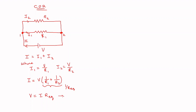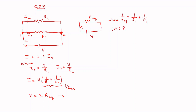Let me take 1 by R equivalent equal to 1/R1 plus 1/R2 so that I can write it in standard form: V equals I·R equivalent. I can map this as an equivalent circuit with R equivalent, voltage V, and current I, where I equals V by R equivalent. So when resistors are connected in parallel, R equivalent is found using: 1/R_equivalent equals 1/R1 plus 1/R2, or equivalently R equivalent equals R1·R2 divided by R1 plus R2.